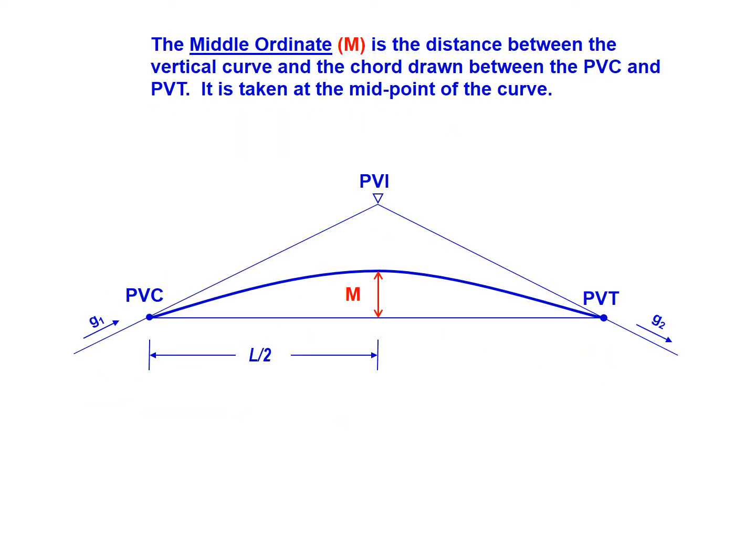The middle ordinate M is the distance between the vertical curve and the chord that are drawn between the PVC and the PVT. The curve and the chord both tie into the PVC and PVT. That distance M, the middle ordinate, is taken at the midpoint of the curve, so aligned there with the PVI.